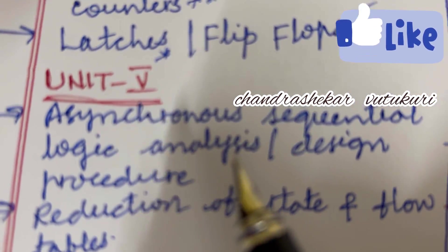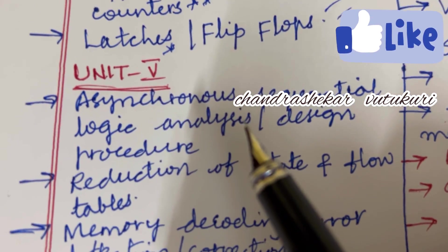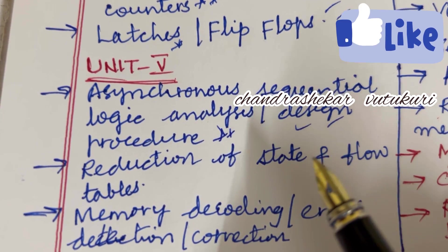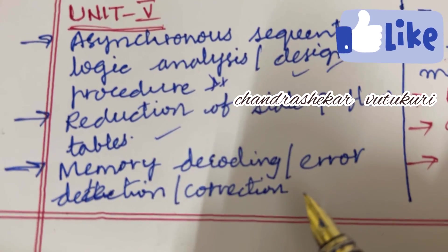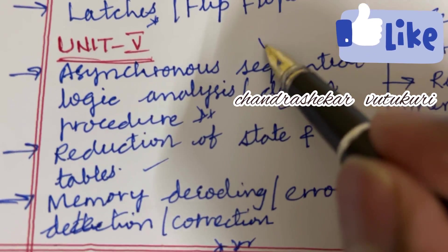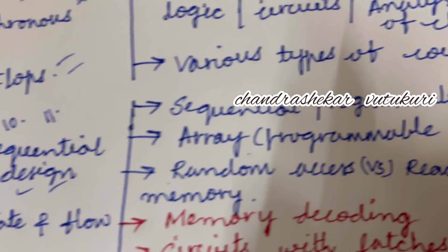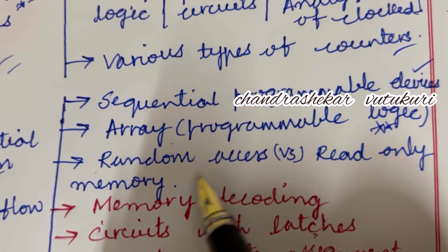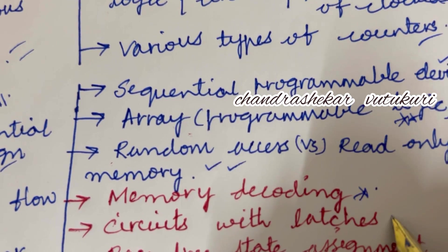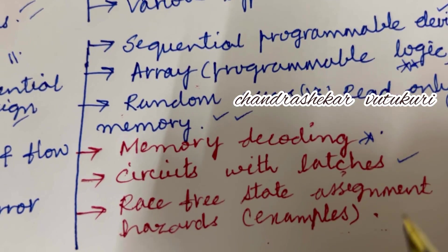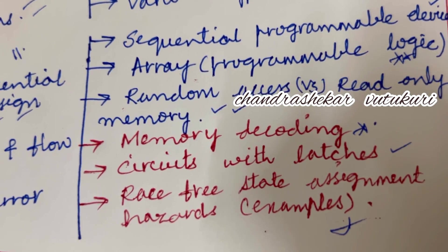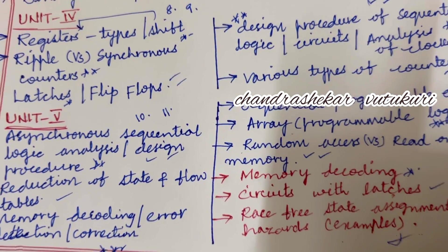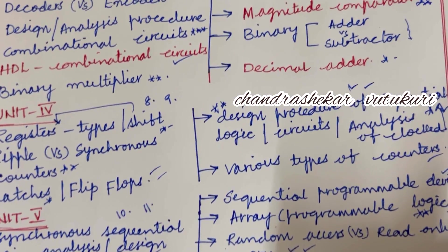Unit 5 is lengthy, and average students may skip it. Asynchronous sequential logic analysis, design procedure, reduction of state and flow tables, and memory decoding and error detection and correction may be short or long questions appearing as questions 10 and 11. Programmable array logic is set as a top question. Random access versus read-only memory is an important question. Memory decoding with latches is a 5-mark question. Race-free state assignment and its design problems are also gunshot questions.